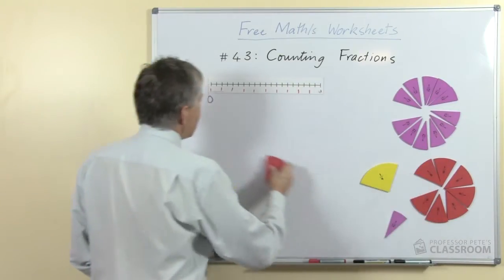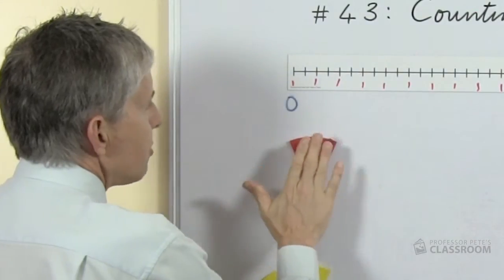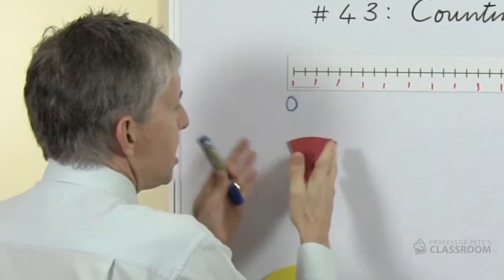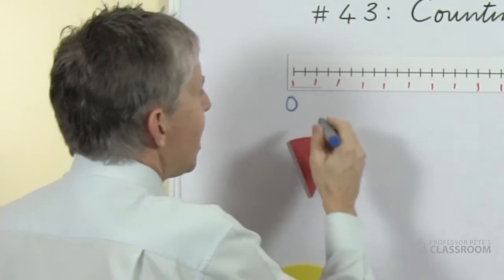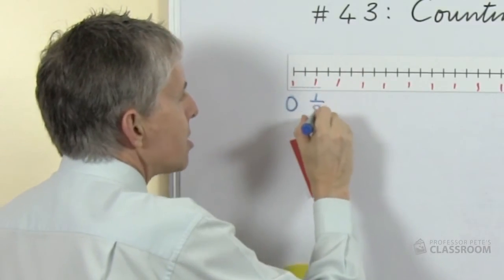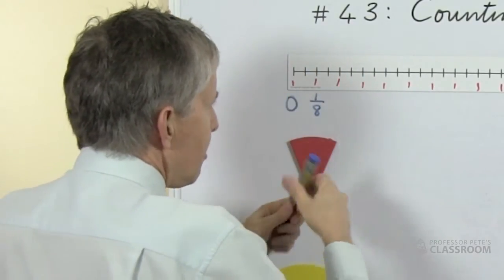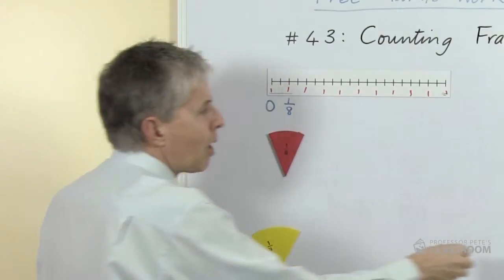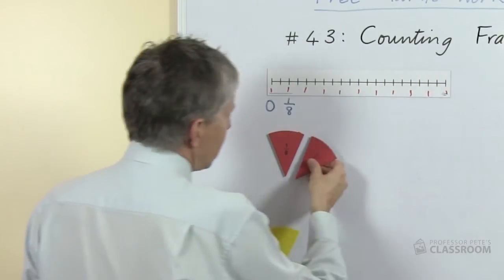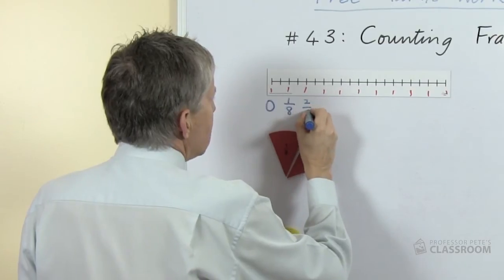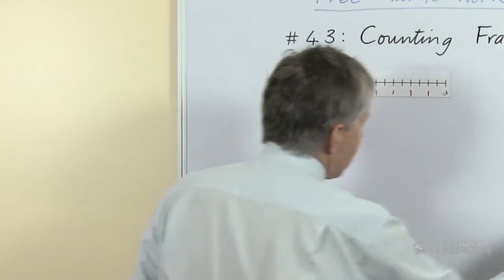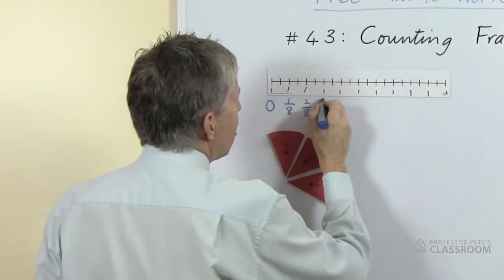So let's do this in eighths. If we say here's a fraction that's more than nothing, what number are we up to? Well, we're up to one eighth. So let's make this point on the number line equal to one eighth. Let's put another one there, what will we call that? Of course that will be two eighths and we continue on.